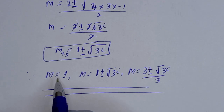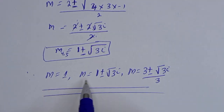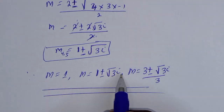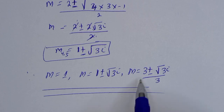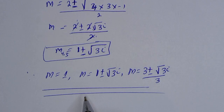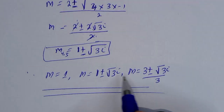Our final answers are: m is equal to 1, m is equal to 1 plus or minus root 3 i, and m is equal to 3 plus or minus root 3 i, over 3. We can check to confirm if our answer is right or wrong. The second and third values are imaginary or complex solutions.